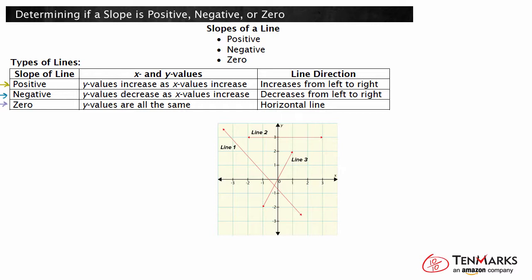We can use this chart to help us identify the types of lines present in this figure. Line 1 decreases as it goes from left to right, so this is a negative slope. Line 2 is horizontal, so this is a zero slope. Line 3 increases as it goes from left to right, so this is a positive slope.